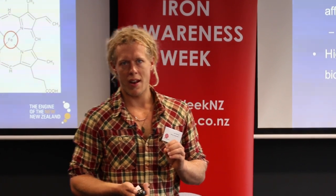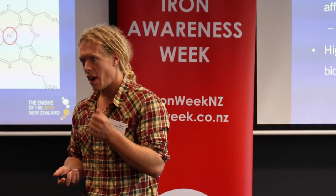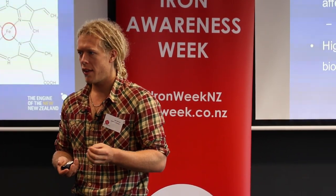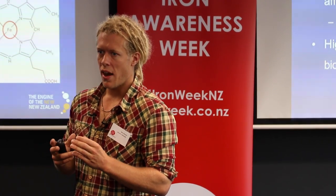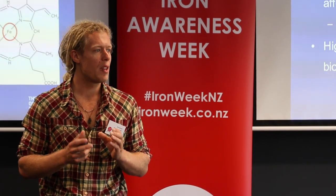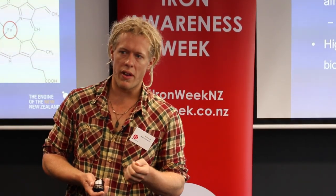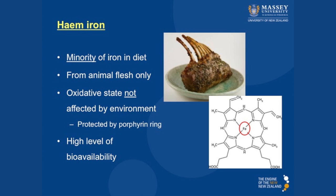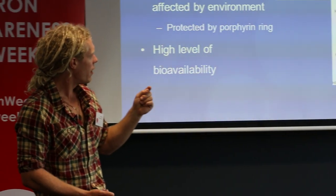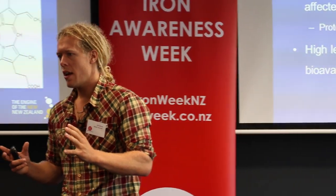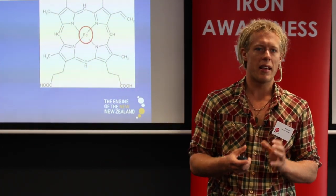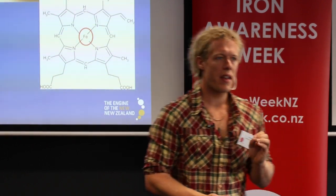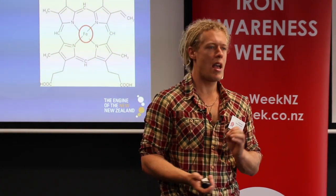Heme iron is an iron molecule bound within a porphyrin ring, as shown here — the iron itself is in the centre, circled in red, and the porphyrin ring is an organic structure that surrounds iron. It acts like a bodyguard: it means that iron chelators cannot chelate this particular iron, it means that this iron stays soluble no matter whether the conditions are oxidising or reducing, and it means that iron cannot be bound by iron absorption inhibitors or enhancers. Iron transport by the enterocyte has its own specific mechanism.